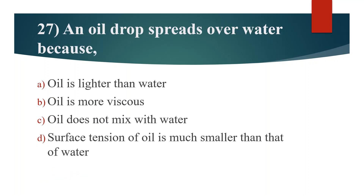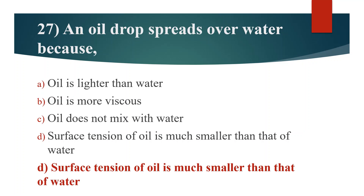Twenty-seventh question. An oil drop spreads over water because. Option A: Oil is lighter than water. Option B: Oil is more viscous. Option C: Oil does not mix with water. Option D: Surface tension of oil is much smaller than that of water. Answer is Option D: Surface tension of oil is much smaller than that of water.